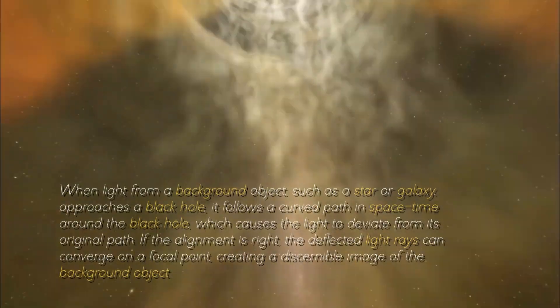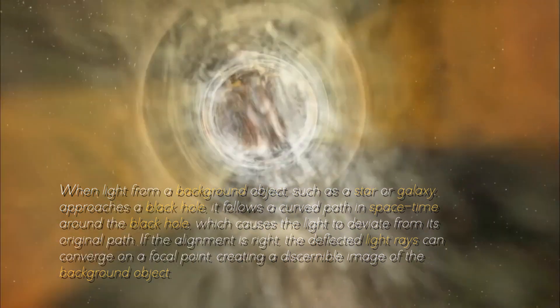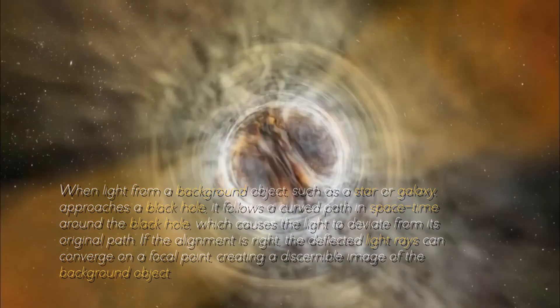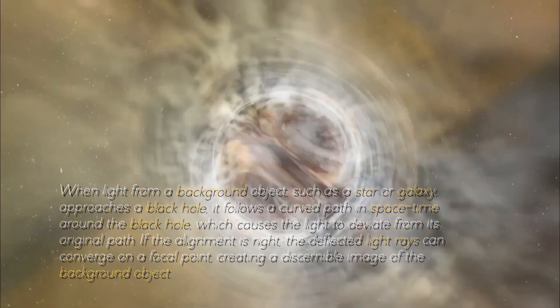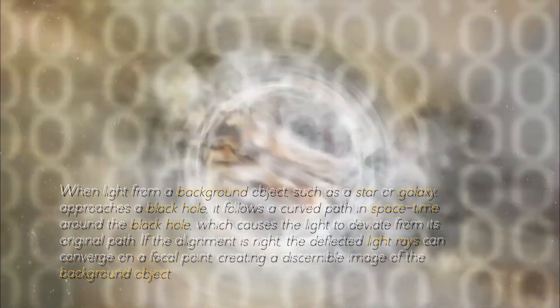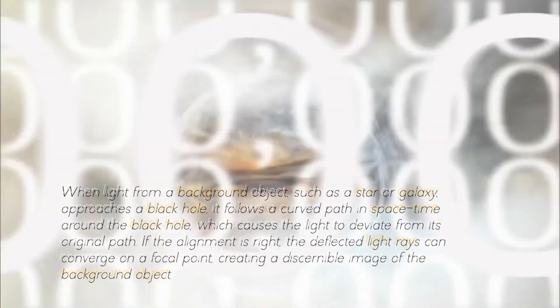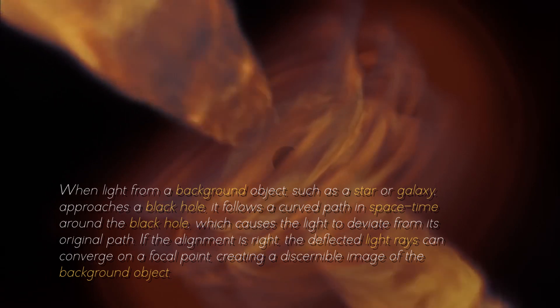When light from a background object, such as a star or a galaxy, approaches a black hole, it follows a curved path in spacetime around the black hole, which causes the light to deviate from its original path. If the alignment is right, the deflected light rays can converge on a focal point, creating a discernible image of the background object.